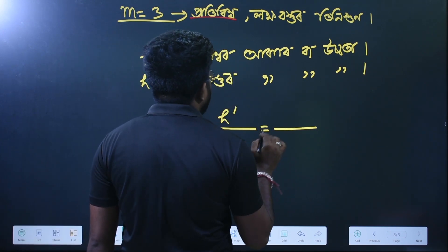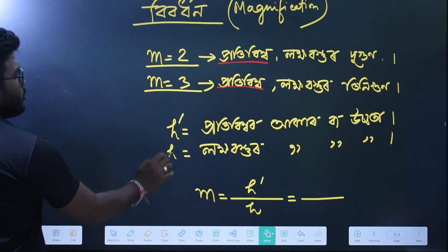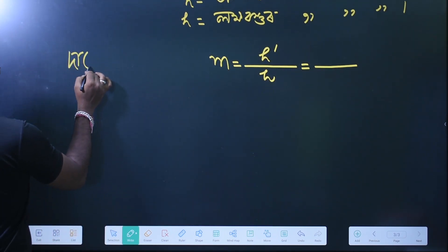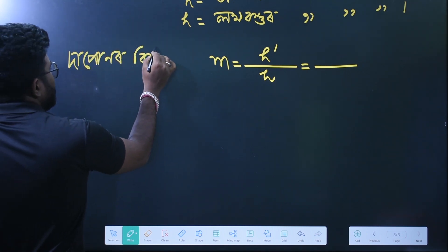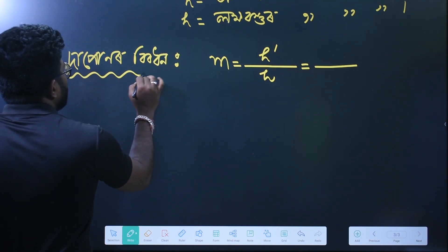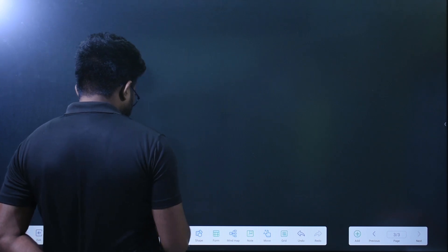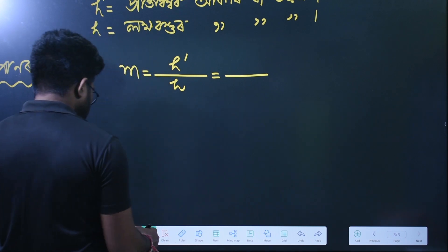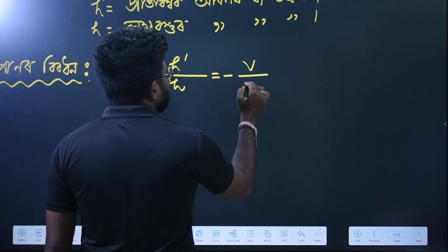The formula is minus V by U. So the magnification formula M equals minus V by U.